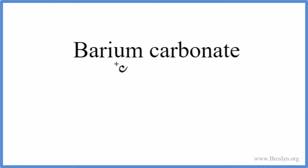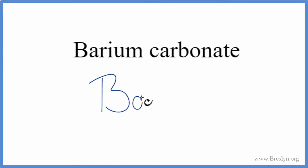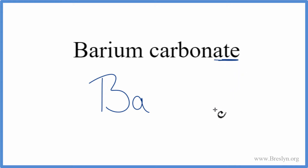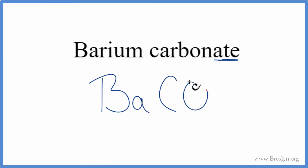To write the formula for barium carbonate, we go to the periodic table. Barium — that's Ba. And carbonate, we won't find that on the periodic table. It's a polyatomic ion. We can see that '-ate' ending here, which means it's a polyatomic ion, and we can look it up on a table of common polyatomic ions. Carbonate is CO₃, 2 minus.